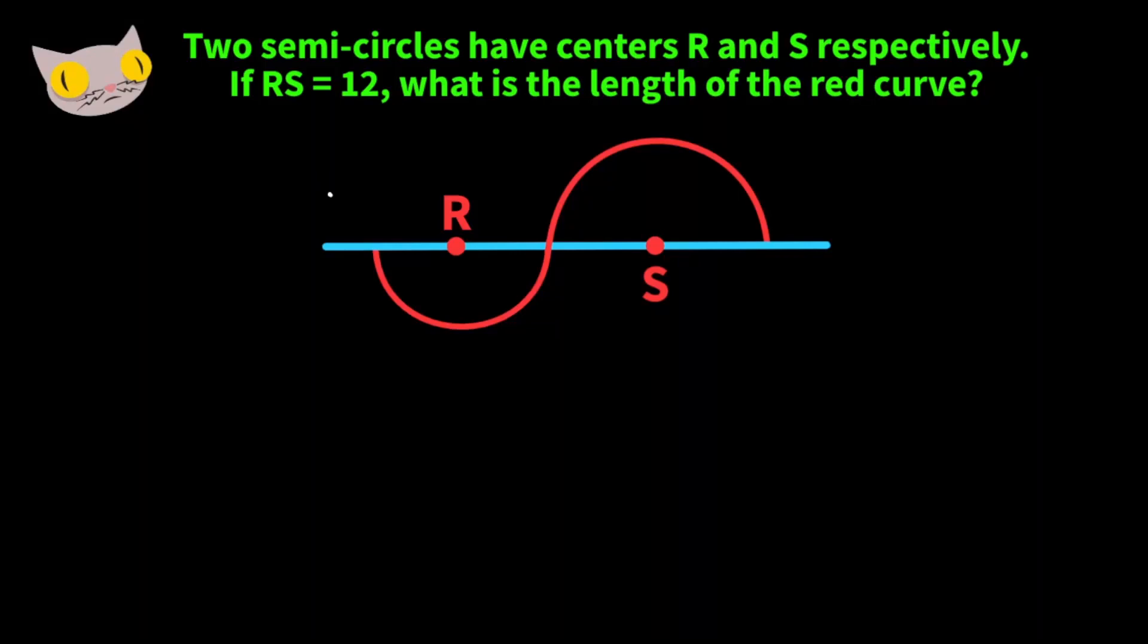Two semicircles have centers R and S respectively. If RS is equal to 12, what's the length of the red curve?